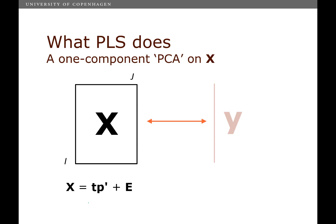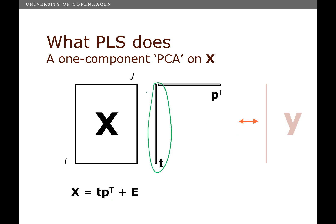So let's have a look at a one component model of my data. If I do a one component model of my data, could be a PCA model or a PLS model, they will be slightly different. That would give me a score vector and a loading vector. And now I can do regression using the score vector.